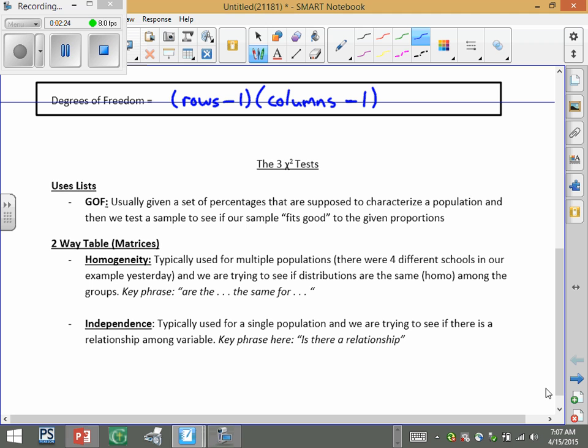So goodness of fit, this is basically when you're going to use the lists. And a lot of times what happens is you're kind of giving us percentages and then that's supposed to characterize the whole population. This is what it should look like for the whole population in terms of music preferences, for example. And then somebody does a sample and we see how good does our data fit or how well does it fit.